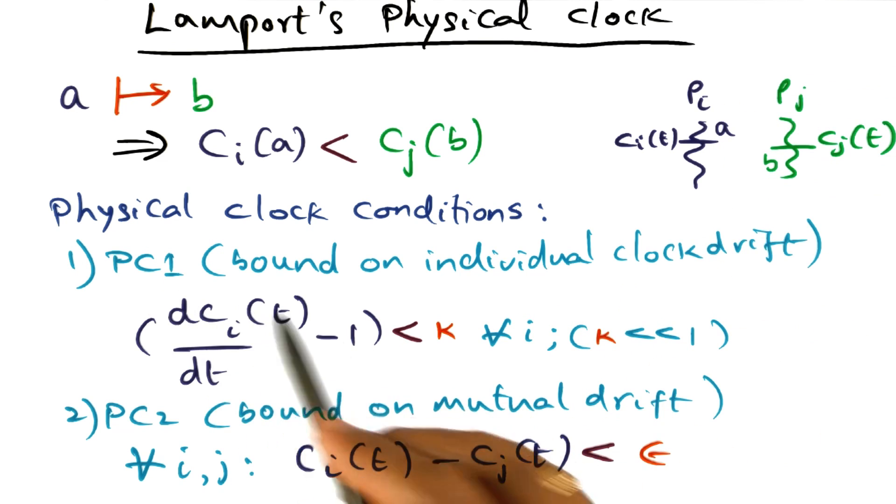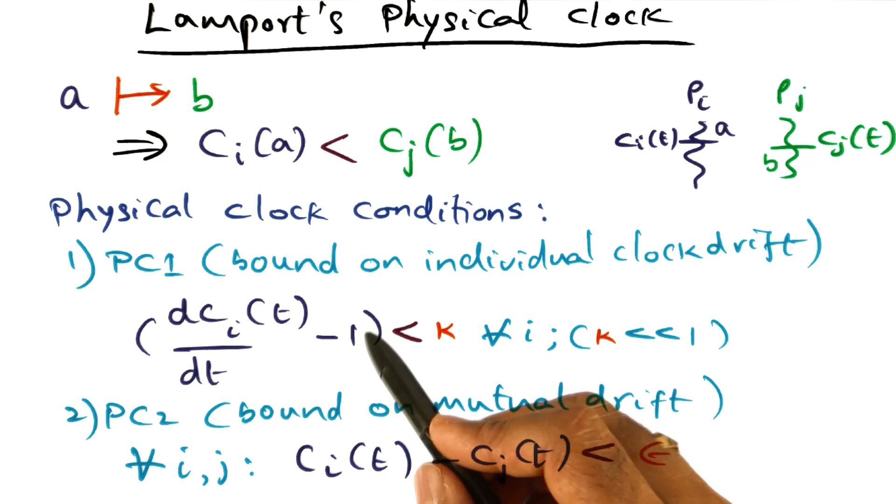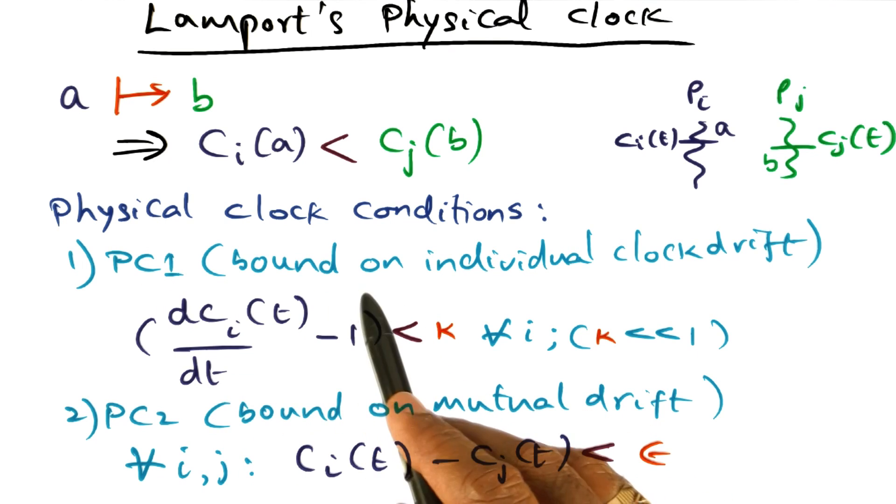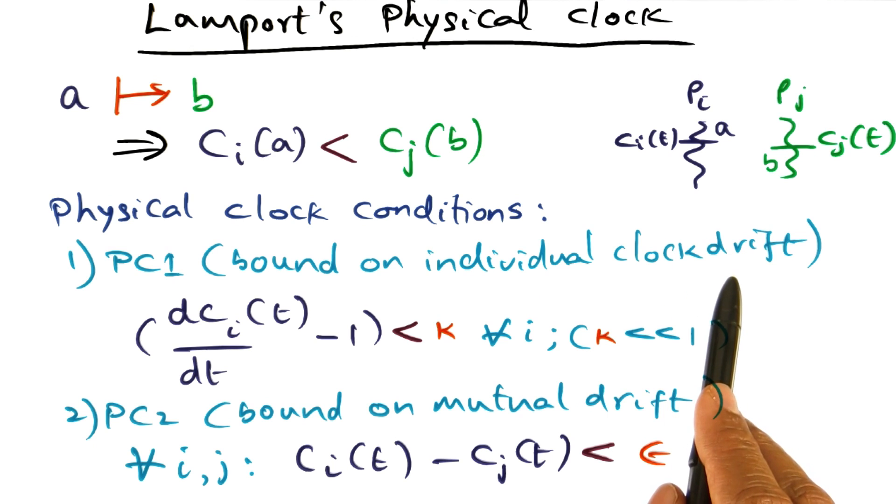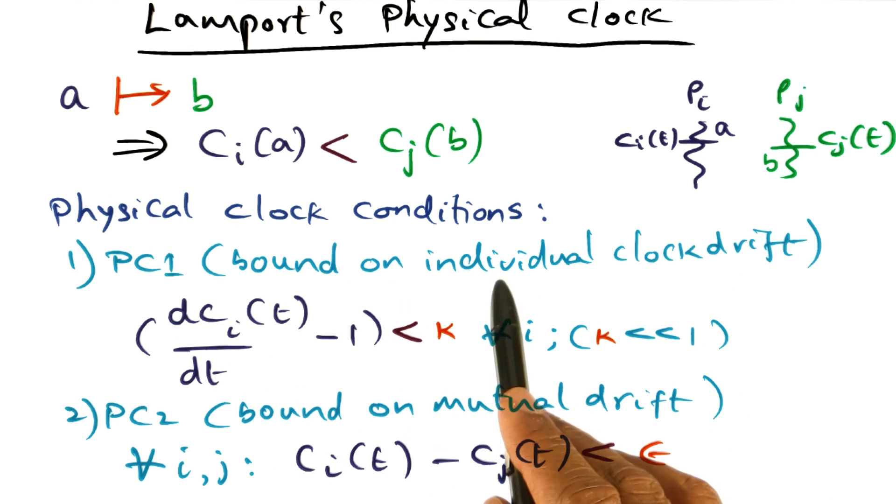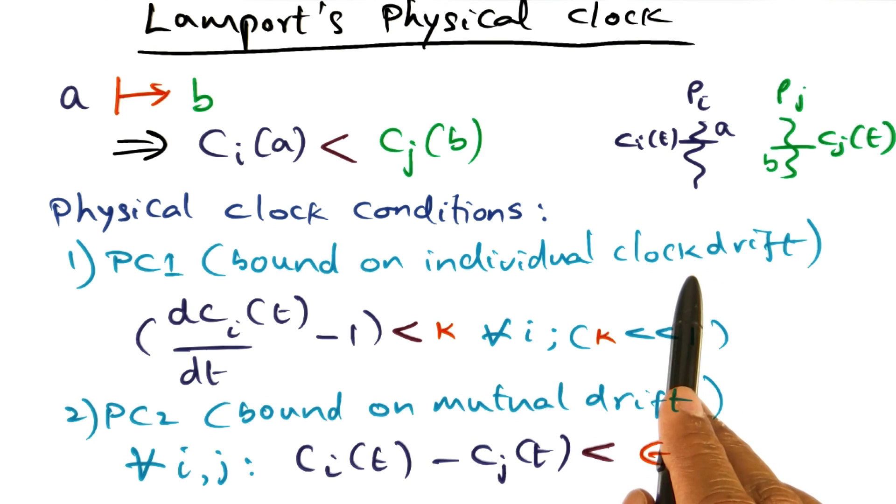And the first condition, which I'll call PC1, I'll refer to that as PC1 later on. The condition is a bound on individual clock drift. So PC1 is a condition which gives a bound on individual clock drift.